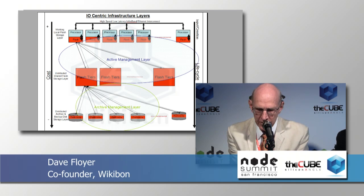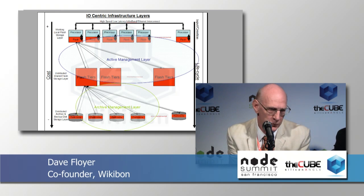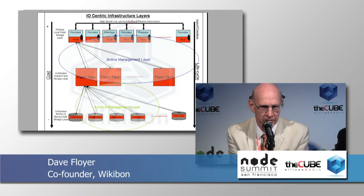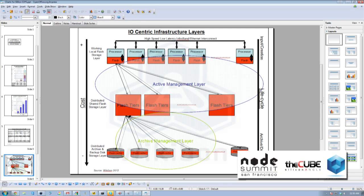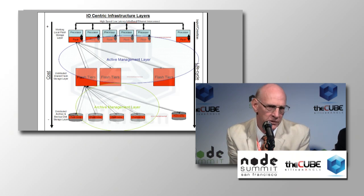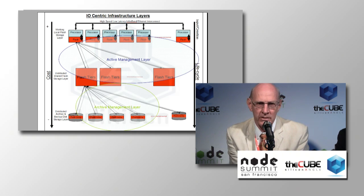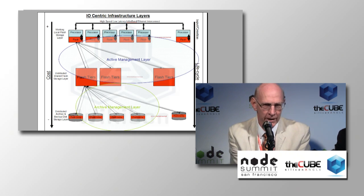So the top layer is the working flash storage layer. What we're looking at there is what came out of this demonstration: a very tight connection between the processor and the flash itself. So you're doing something called atomic writes, and what that means is that instead of going through the IO stack, which is thousands of instructions long,